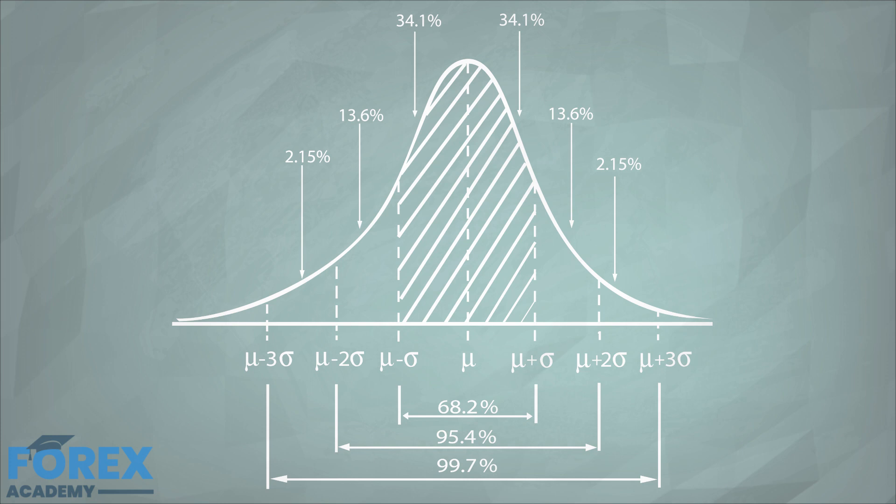A standardized normal distribution is called a z-distribution. Every value in a z-distribution is called a z-score and represents the number of standard deviations that the value is away from its mean.